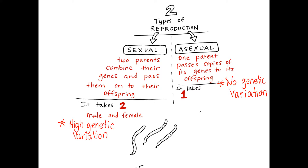Here's what's happening with sex cells — meaning sperm and egg. They only have half of a person's DNA. So half of the DNA from the dad is in sperm, and half of the DNA from the mom is in the egg. Half plus half equals a whole, right?